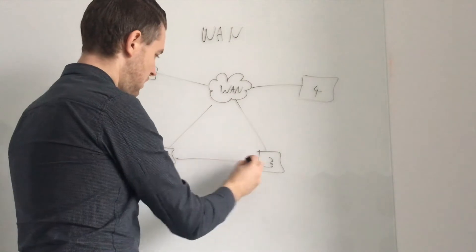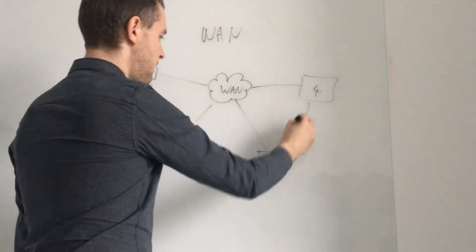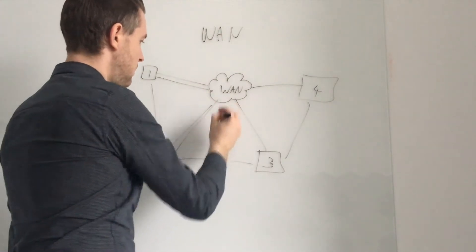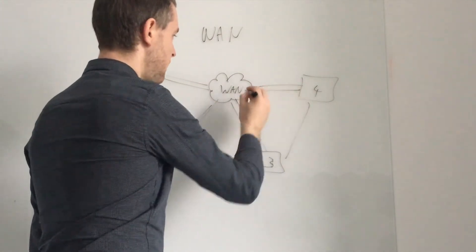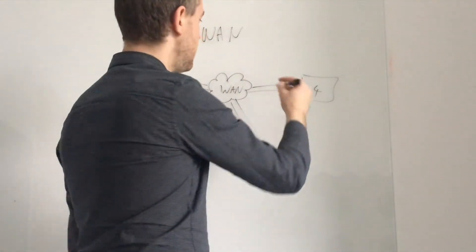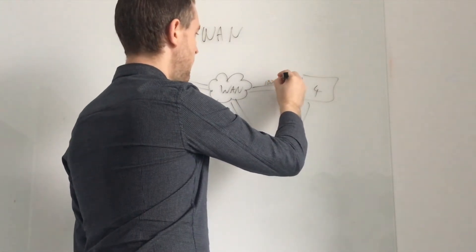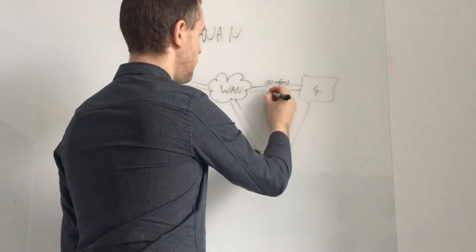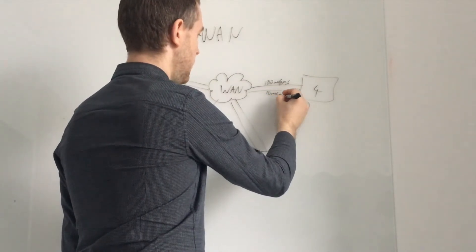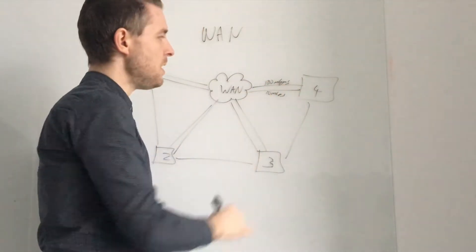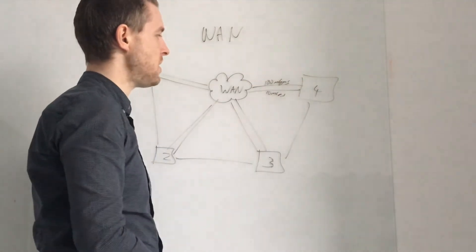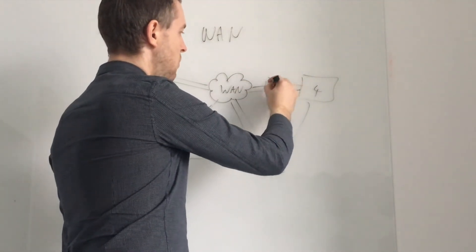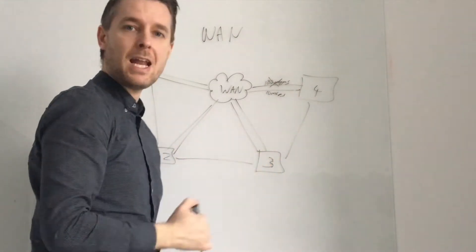They could be having redundant links between each other as well. A lot of places will have multiple links into your internet. So one could be a faster link, let's say you've got a 100 megabit per second link, and then this one could be a 10 megabit per second link. This could be your primary link so all of your main data goes from one site over 100 meg. So then if this link goes away it then fails over to like a 10 meg link.